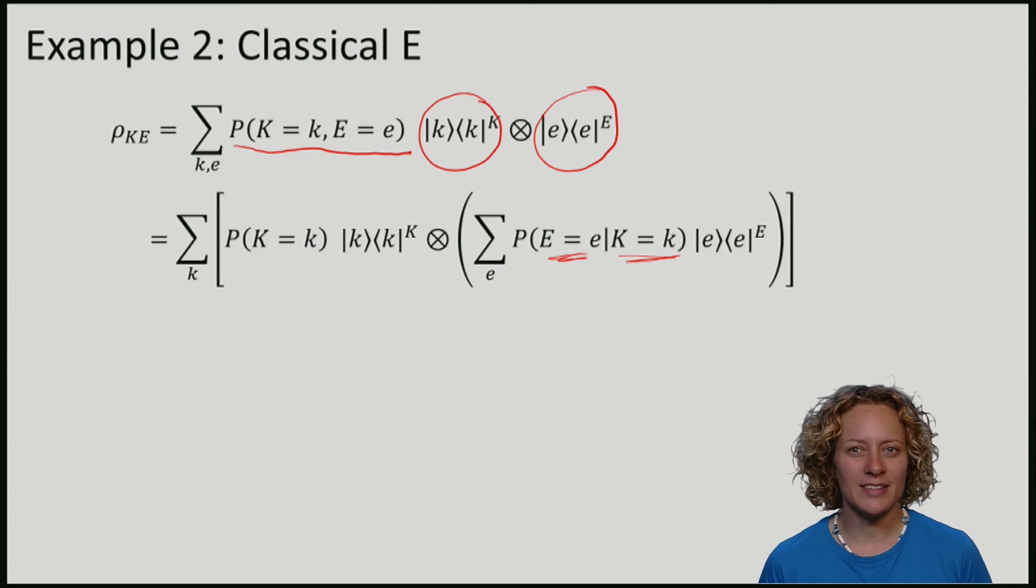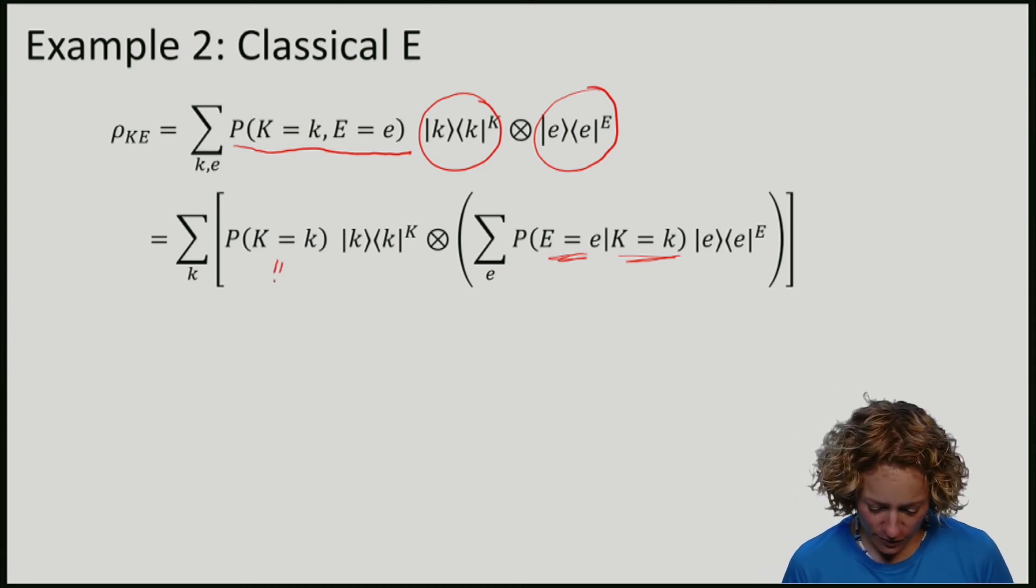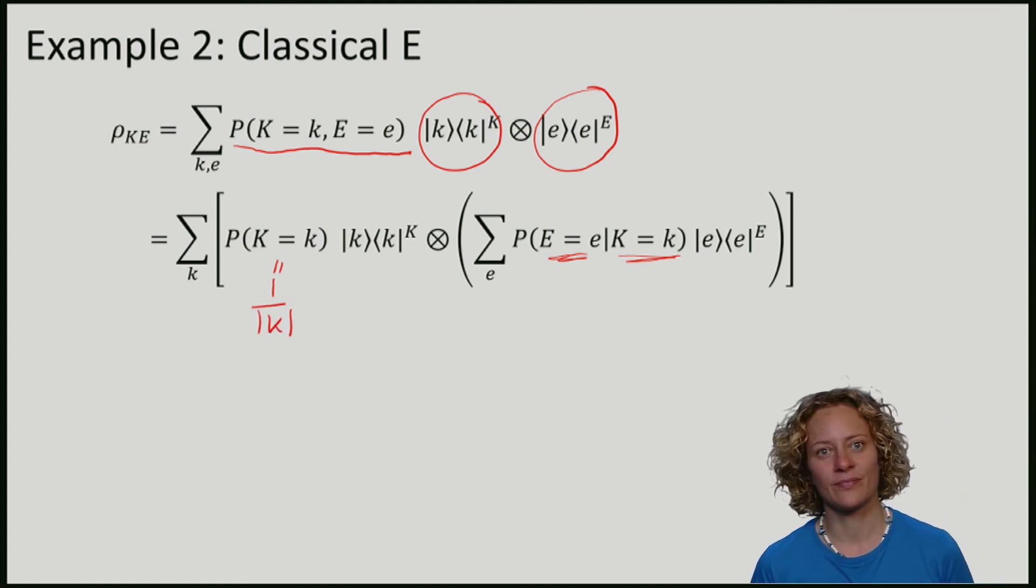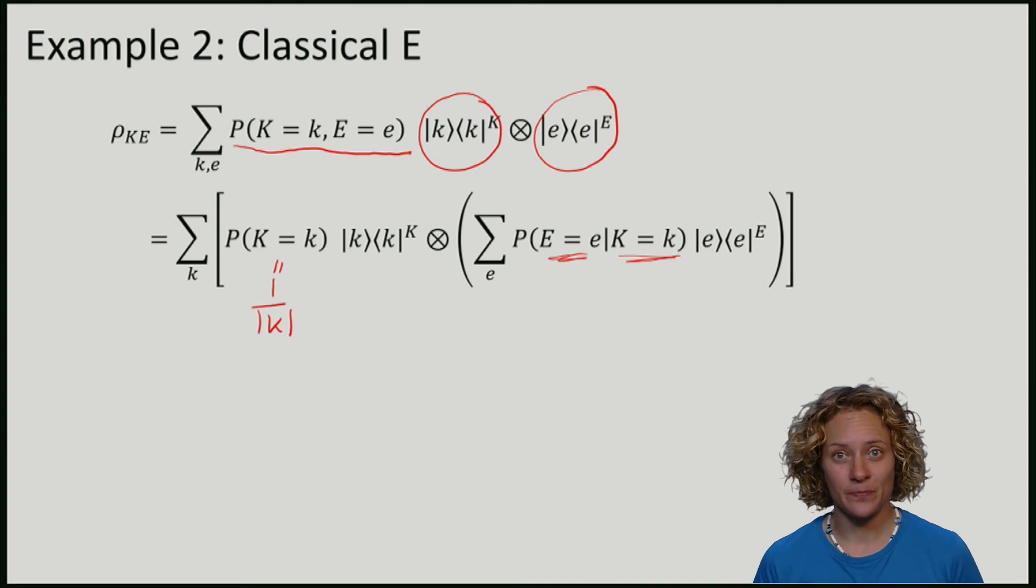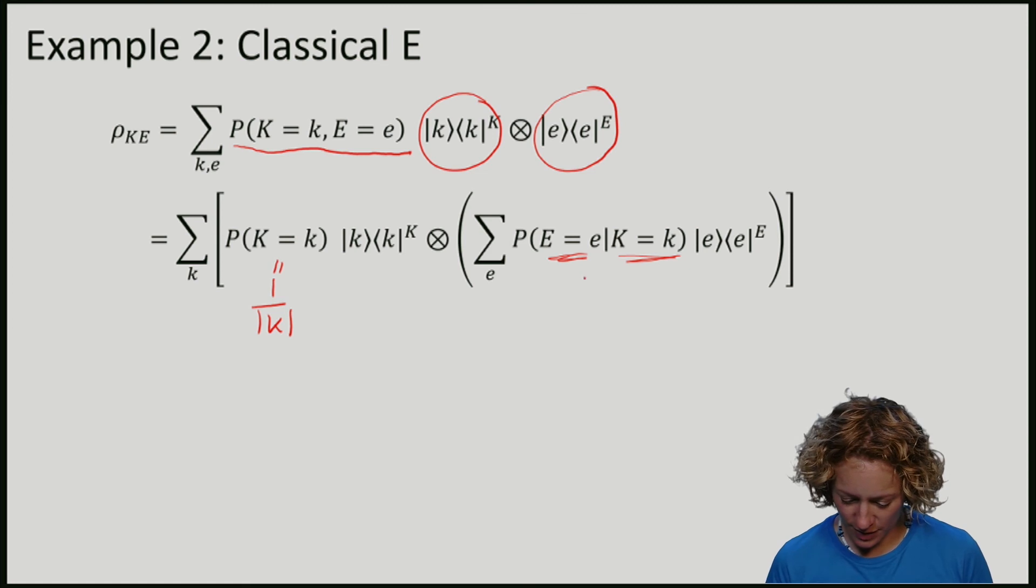We want that the key is uniform. So the probability here is 1 divided by the number of possible keys. We also want that Eve has no information about k, which means that the probability of e taking some value should be independent of the key. So this here should just be equal to the probability of e.